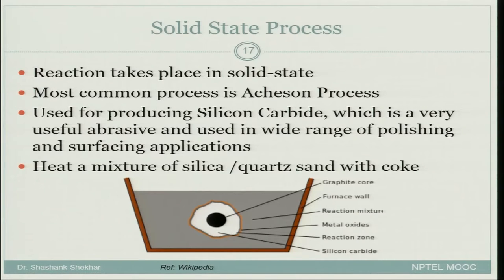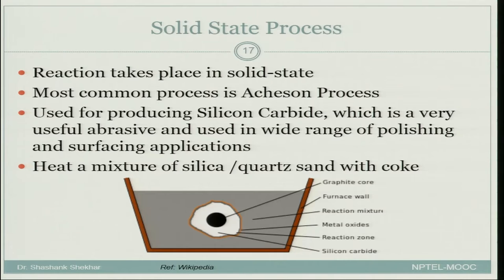Let us look at another process for manufacturing which is the solid state process, meaning the reactants are in the solid state and the product is also in the solid state. In some ways even our oxide reduction was a solid state process, but there we were using hydrogen gas and the product was moisture — the starting material was oxide in solid state and the reduced metal was also in solid state. But here everything is in the solid state, so reaction takes place in solid state. One of the most common processes is what is known as the Acheson process.